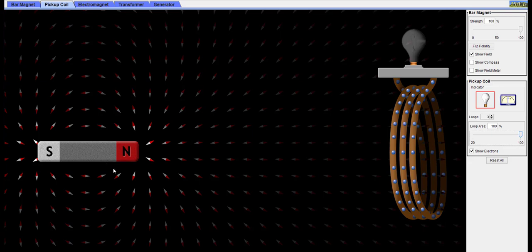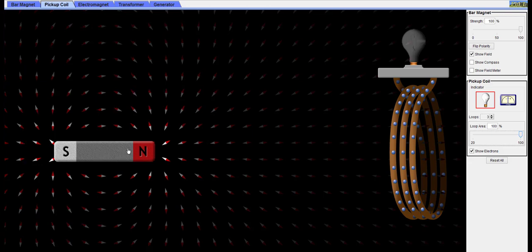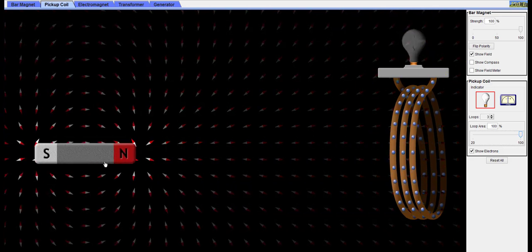What if we move the magnet faster towards the coil? The current increases and the lamp glows even brighter. Finally, you'll have probably already noticed that no current flows and the bulb stops glowing when the magnet stops moving.